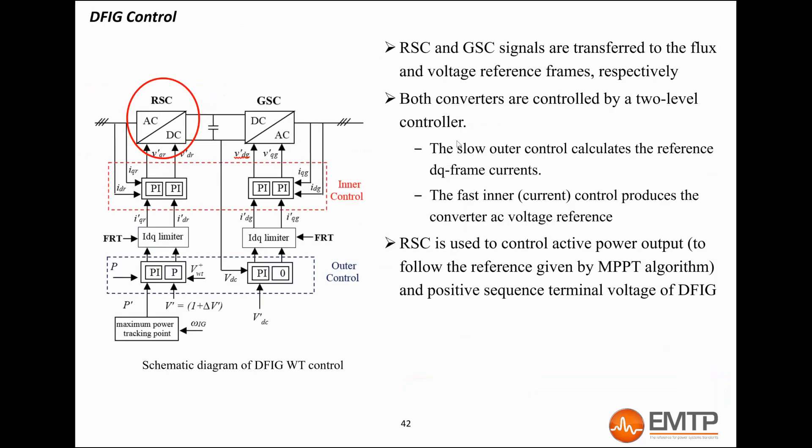On the machine side, the DQ transformation angle follows the induction machine flux. The Q component corresponds to the real power, and the D component to the reactive power. Therefore, by controlling the Q-axis current, the converter controls the machine electrical power.